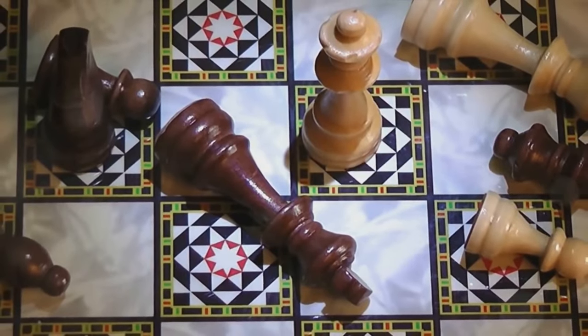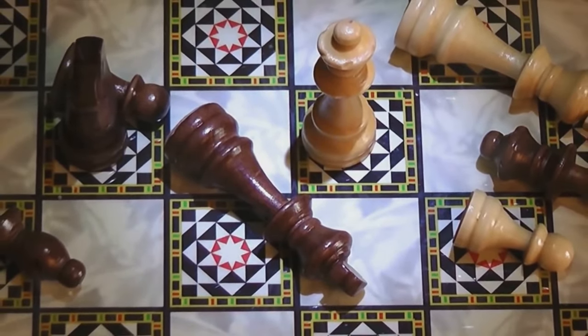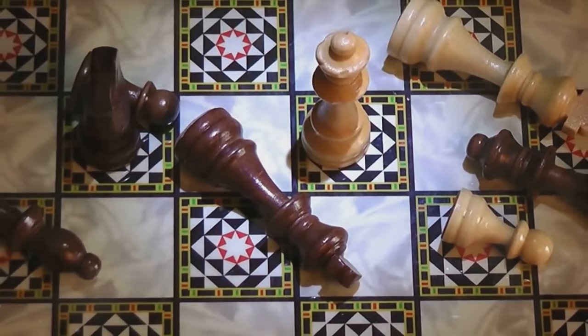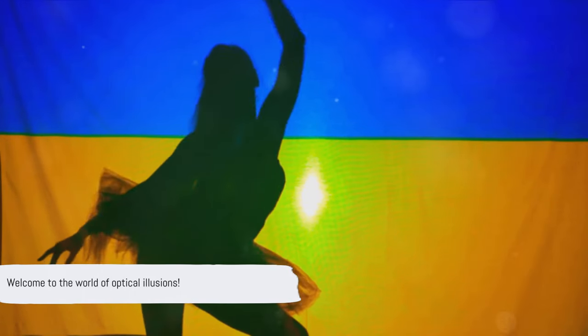Next time you play chess, remember, it's not just your opponent you need to watch out for, but the sneaky shadows too. Have you ever caught your brain red-handed trying to decide whether a spinning dancer is twirling clockwise or anti-clockwise? Well, welcome to the world of optical illusions where your brain flip-flops like an acrobat on a trapeze.